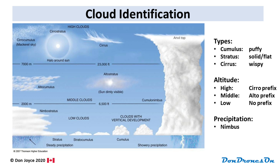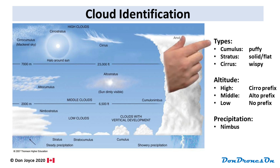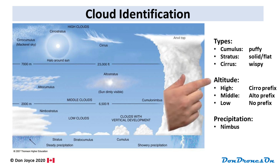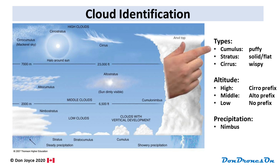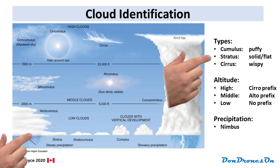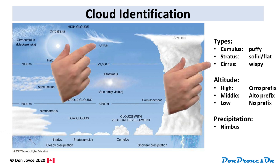Here's a quick introduction to cloud identification. There are basically three dimensions to clouds: the type of cloud, the altitude the cloud resides at, and whether or not it has precipitation. In terms of types, there are three: cumulus, which are the puffy clouds with distinct chunks; stratus clouds, which are generally solid-looking or flat-looking with no distinct features; and cirrus clouds, which are the wispy ones. Cirrus clouds only exist at the highest altitudes.